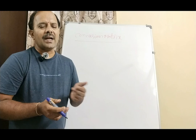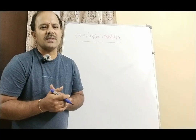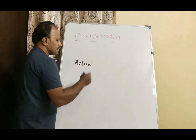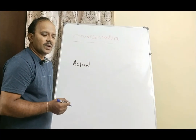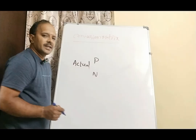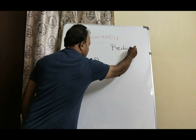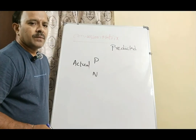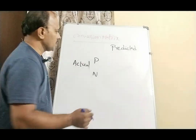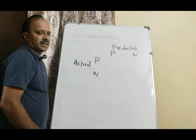This is a matrix that shows the actual and predicted values. It has the actual values, which can be positive or negative, and it also represents the predicted values. Since it is a classification problem, the model can predict a positive or a negative, so in the predicted values we also have positive and negative.